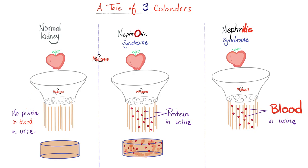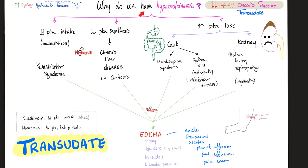A normal kidney is one that does not let protein or blood end up in the urine. If you have nephrotic syndrome, you're losing lots of protein in the urine. If you have nephritic — itis means inflammation — your kidney is bleeding into the urine. Nephrotic syndrome means your kidney is losing protein.